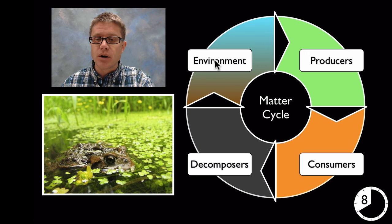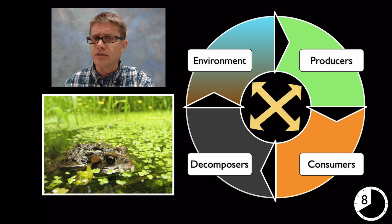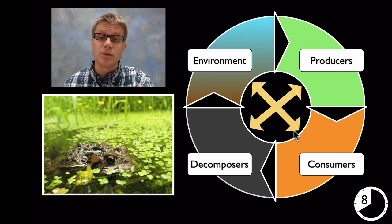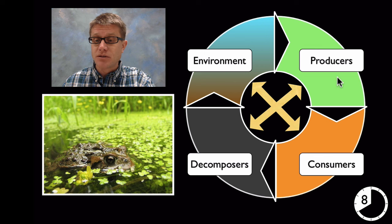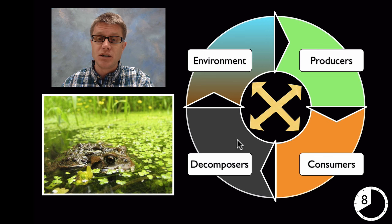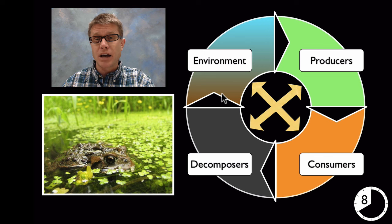Now this is usually where matter goes from the environment to the producers, consumers, decomposers. But know that it doesn't have to go in that direction. Obviously we're taking in material from the environment. So for example oxygen is something that I'm breathing in from the environment. And plants don't have to be eaten by consumers for them to be decomposed and moved back into the environment. But it does show where matter is flowing.